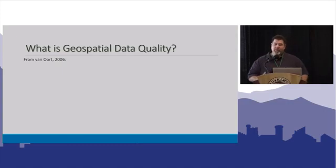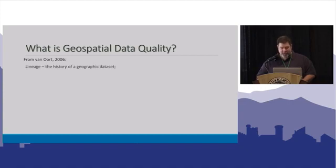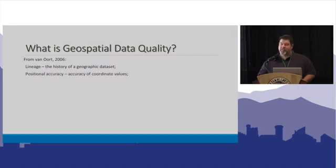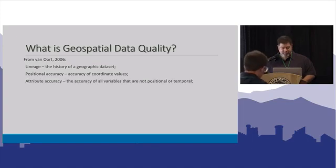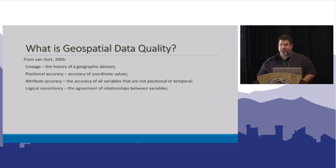From an academic point of view, we lump geospatial data quality into six characteristics: the lineage — the history of the geographic data set; accuracy, particularly positional accuracy — how closely does the data represent its true position on the ground; and attribute accuracy — is it the thing that we say it is, does it have the right characteristics; and logical consistency — whether or not we are consistent in how we represent the data.